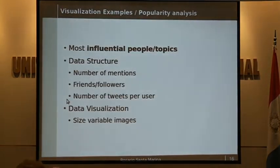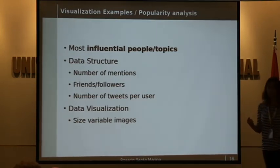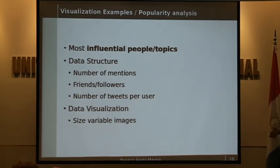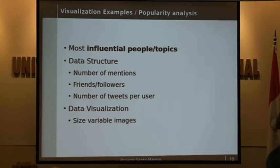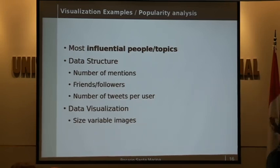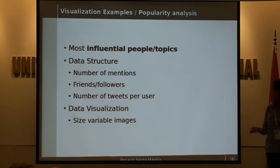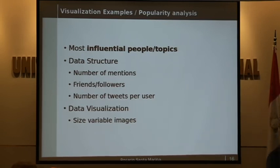Another example is to see how influential a topic or a TV personality is to people. To do this, we use different kinds of information, like the number of mentions, how many friends or followers certain users have, and the number of tweets.